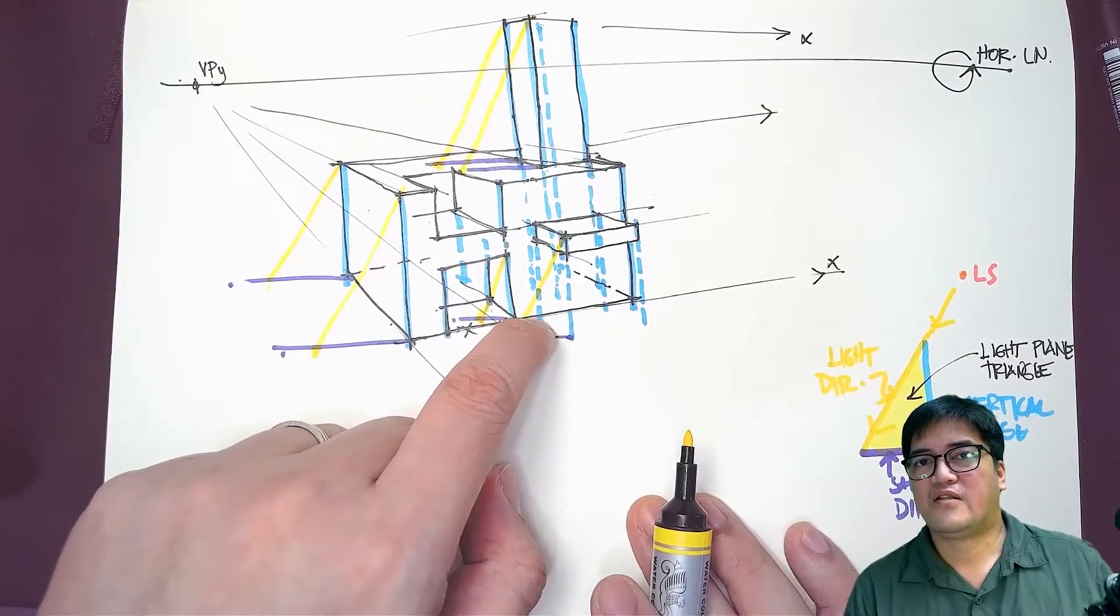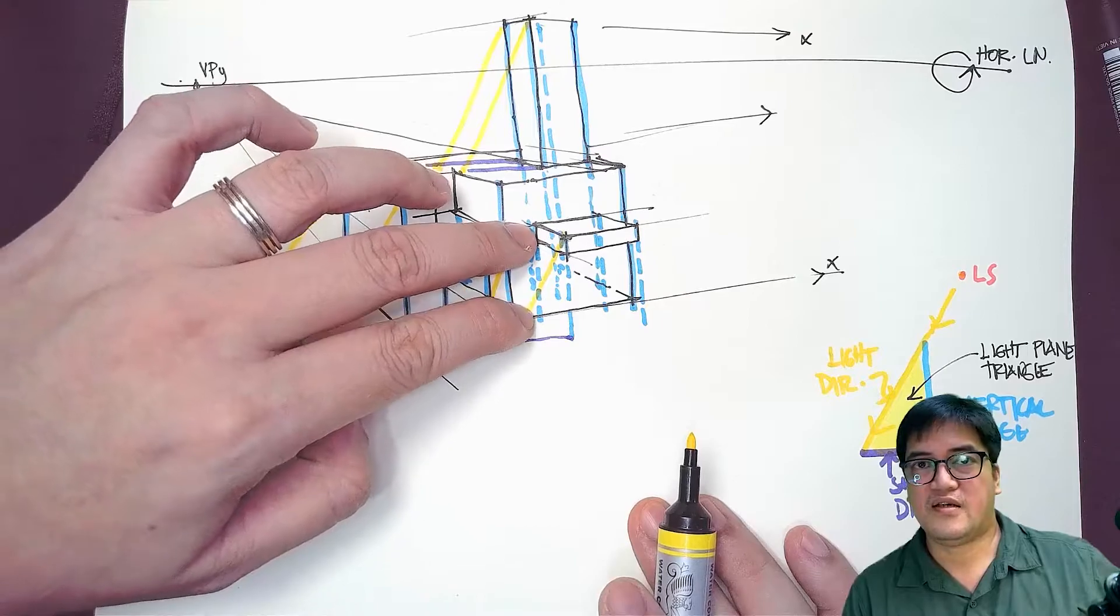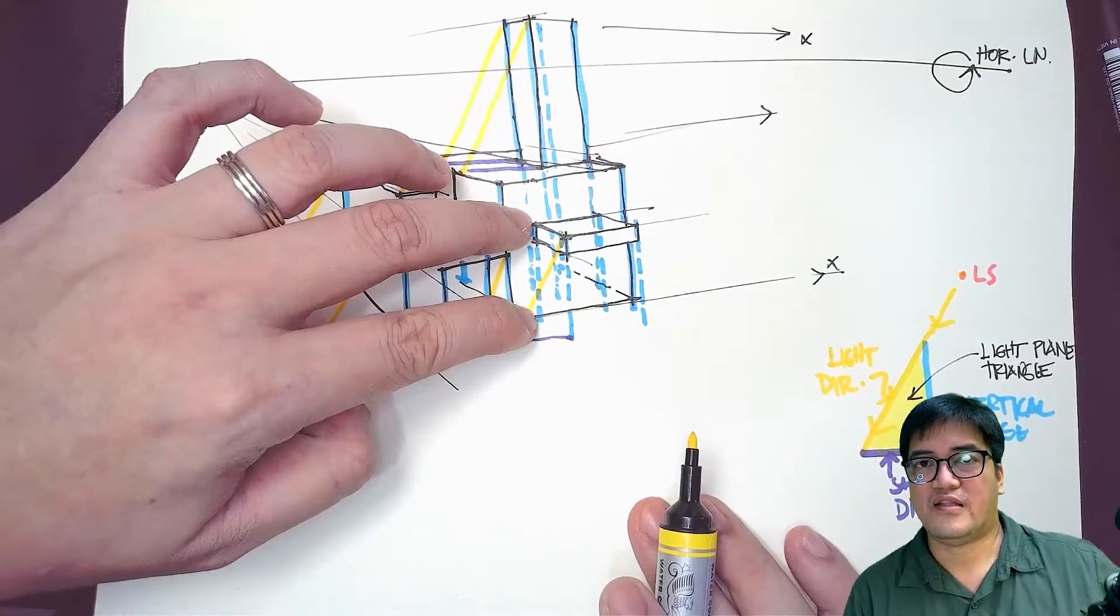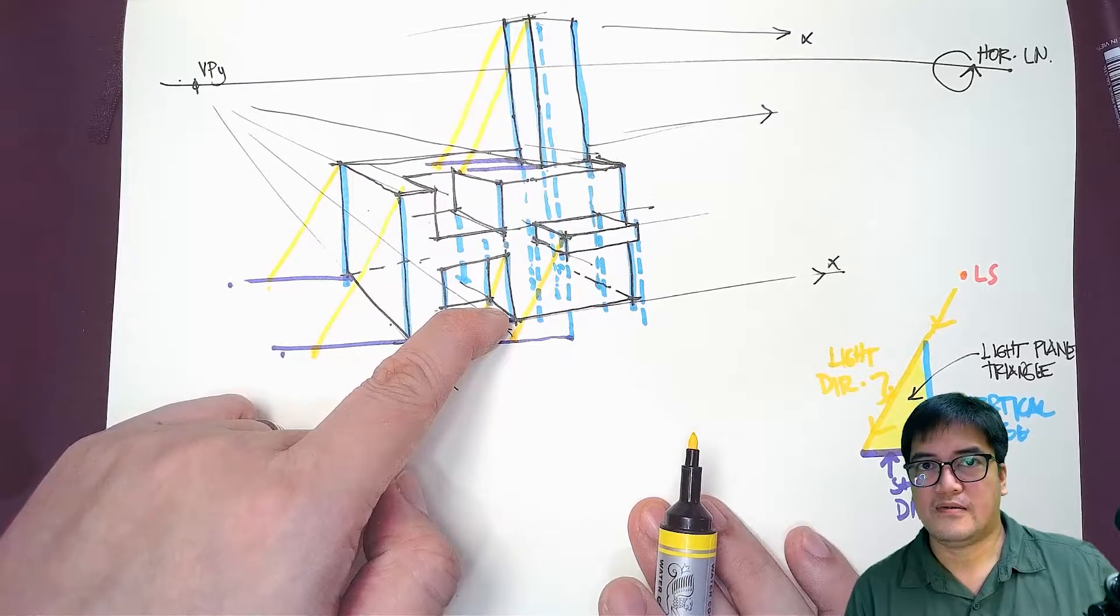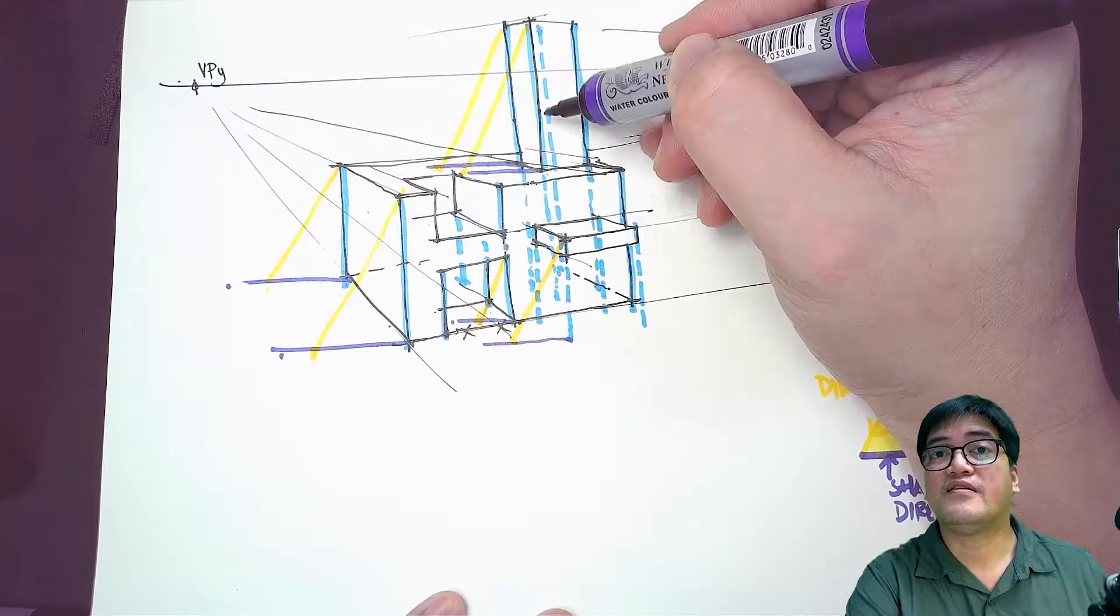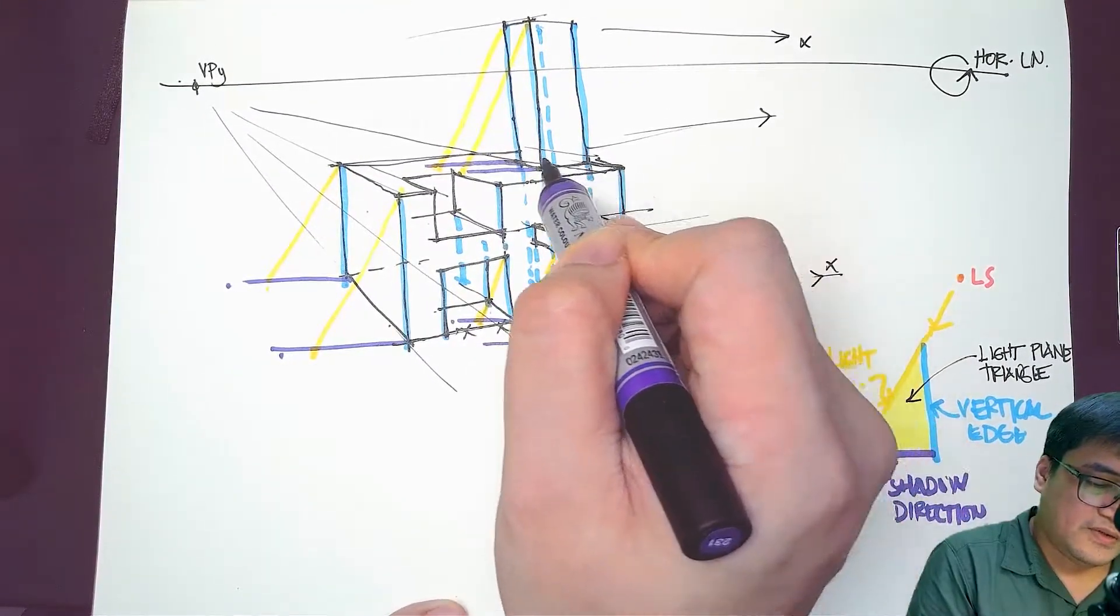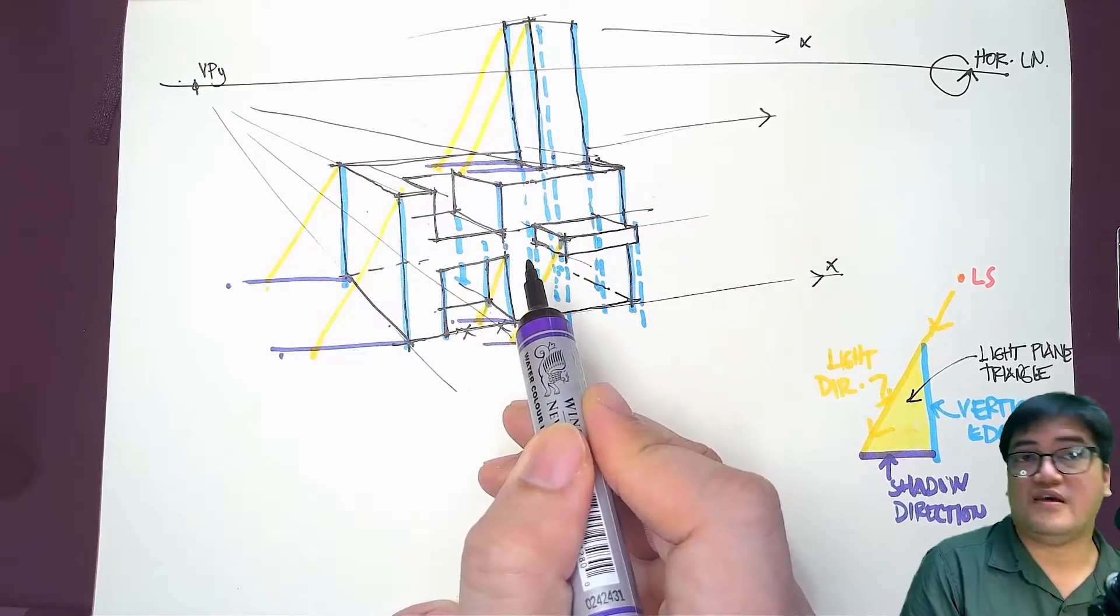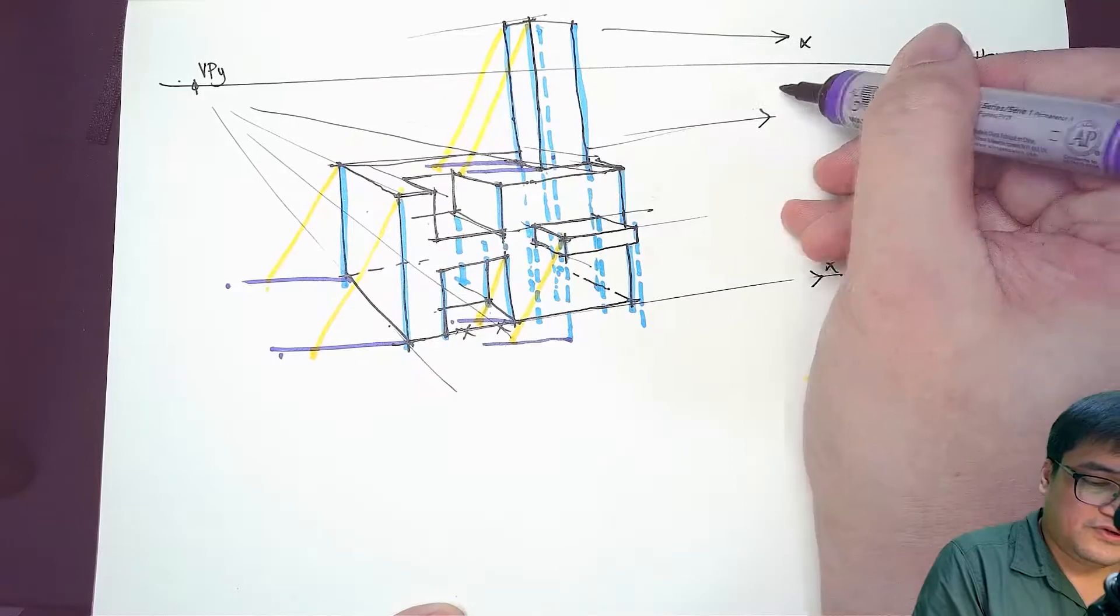Later we'll come back to this. If we imagine this, okay, so this is our vertical line and the shadow line is going to go into the building. I need another shadow line for this vertical edge behind. First determine where it's originating, which is there, right close to this.